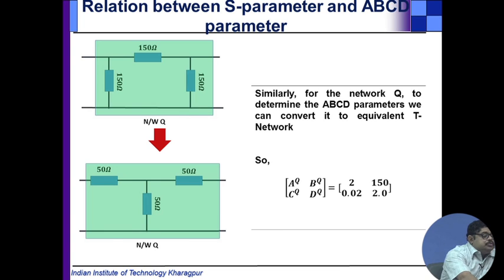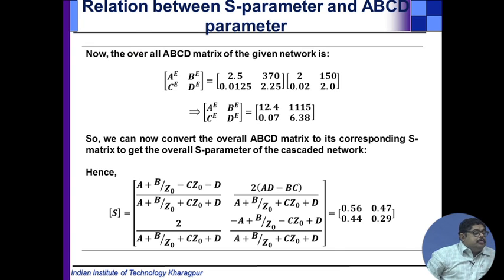This you know, this two we have found. The overall ABCD matrix is this, and then this ABCD matrix can be converted to S-matrix by going like that. This is to show you the usefulness of the ABCD parameter if you can convert from S to ABCD, nothing like that.